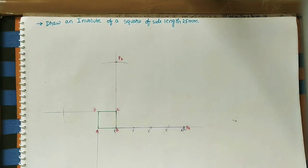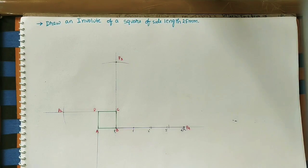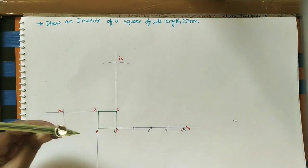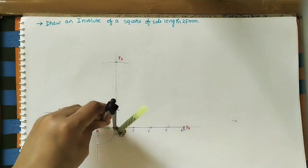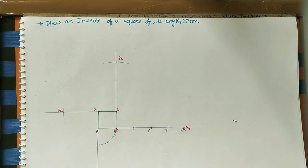After marking P2, take P1 length using the compass and mark it on the fourth side. With A as center, draw an arc up to point P. Take the intersection point as P1. Now join P, P1, P2, P3, and Q (or P4) to get the involute for this square.